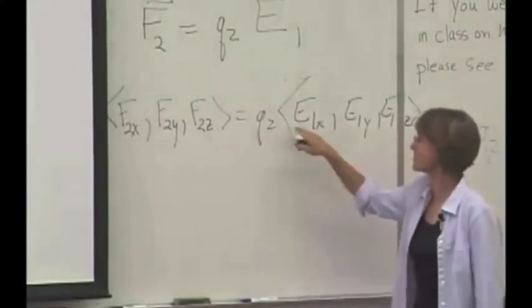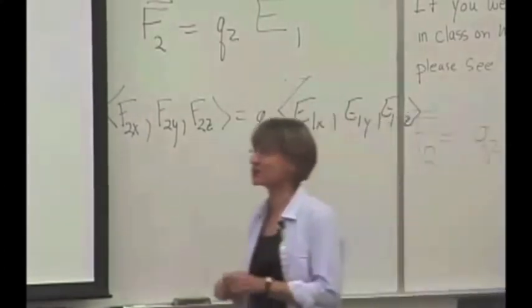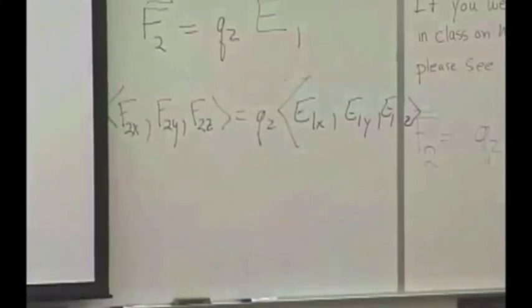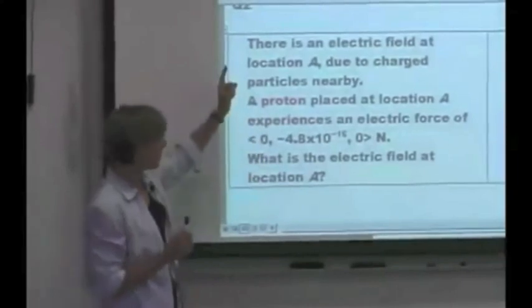The y component is equal to the charge times the y component and the z times the z. Well, the charge is not zero, and that certainly tells us that the x and z components of the electric field must be zero. So we've only got a y component.